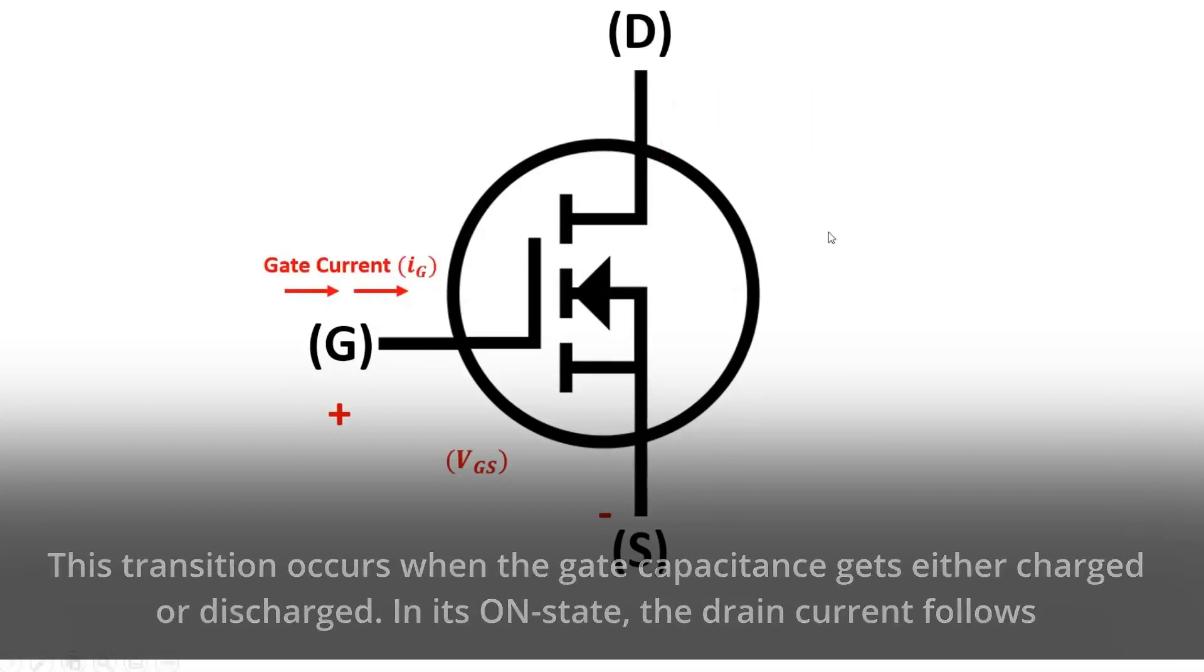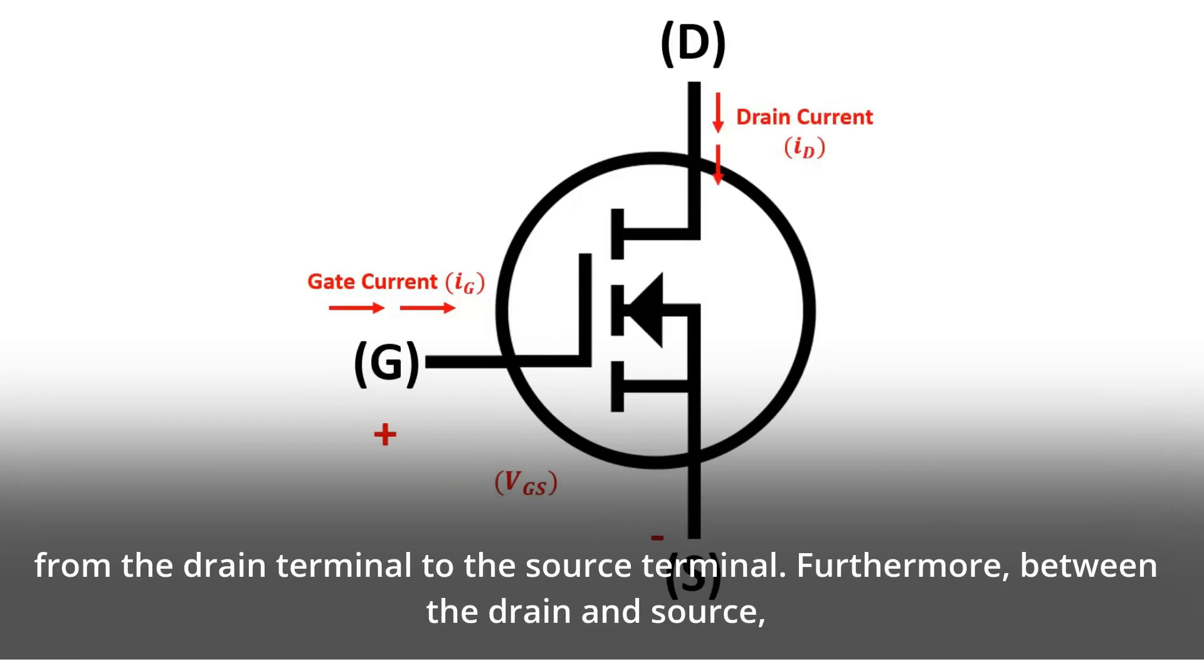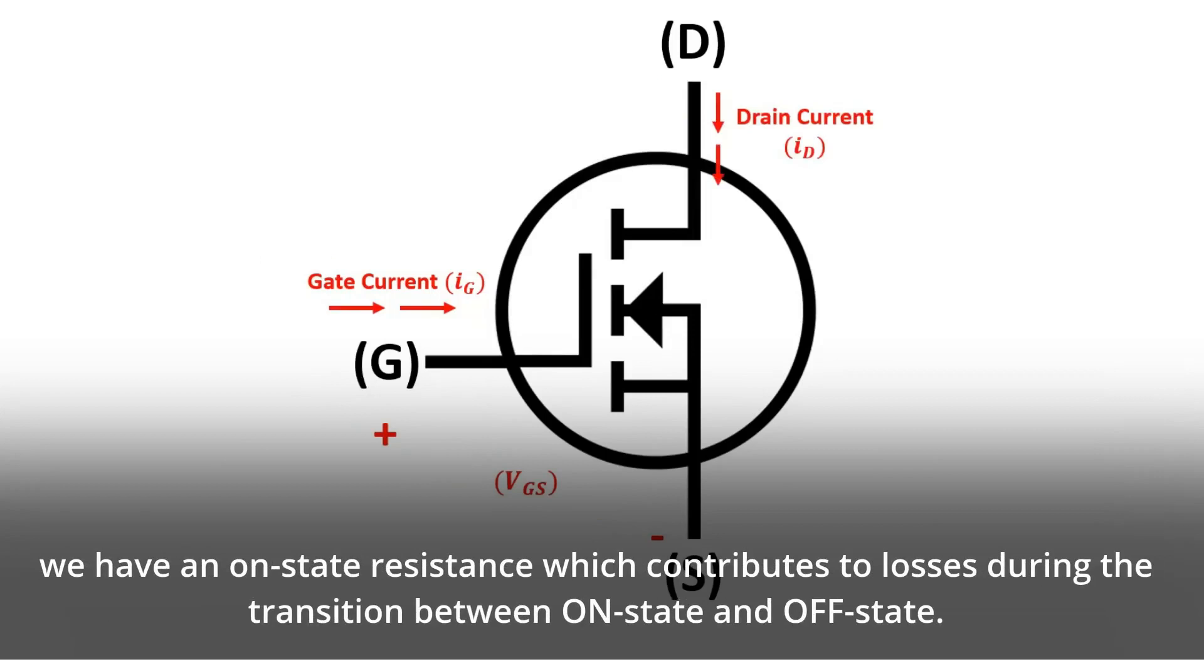In its on-state, the drain current flows from the drain terminal to the source terminal. Furthermore, between the drain and source, we have an on-state resistance which contributes to losses during the transition between on-state and OFF state.